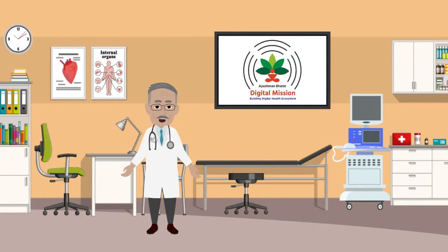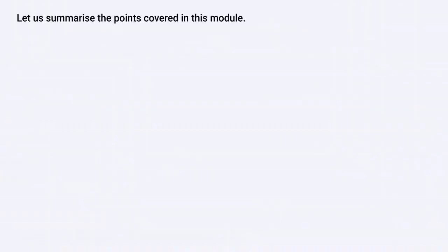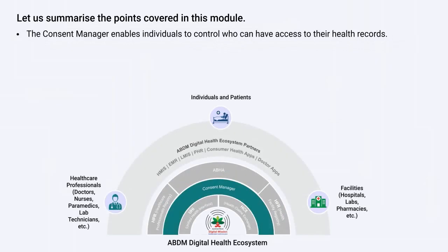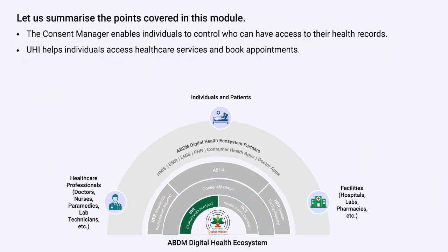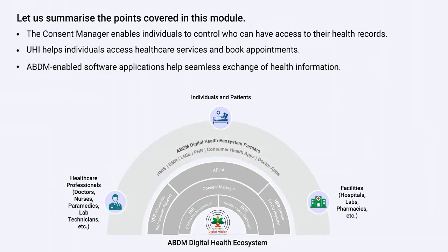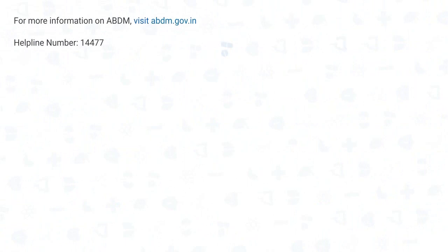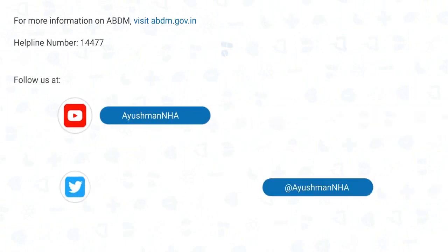In summary, an ABHA for a patient and HPID for a doctor, coupled with the Consent Manager, UHI, and the Digital Health Partner Ecosystem, can completely transform healthcare. The Consent Manager enables individuals to control who can access their health records; UHI helps individuals access healthcare services and book appointments; and ABDM-enabled software applications help in the seamless exchange of health information. For more information on ABDM, visit the ABDM website and follow their social media handles.